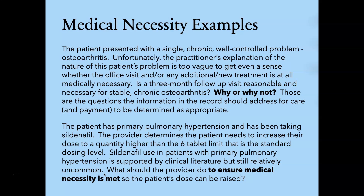Let's look at a couple of examples. First example: a patient presented with a single chronic well-controlled problem, osteoarthritis. Unfortunately, the practitioner's explanation of the nature of this patient's problem is too vague to get even a sense of whether the office visit and/or any additional or new treatment is at all medically necessary. Is a three-month follow-up visit reasonable and necessary for stable chronic osteoarthritis? Those are the questions that the information in the medical record should address for care and payment to be determined as appropriate. If the documentation in the chart doesn't clearly demonstrate the need and the value, it's going to be very hard to justify medical necessity.